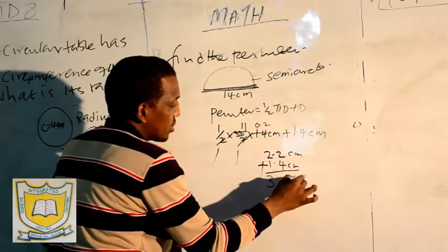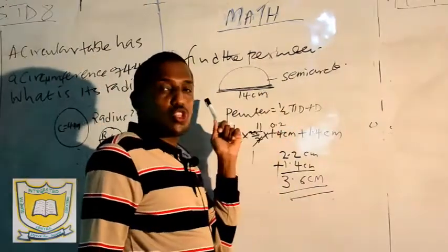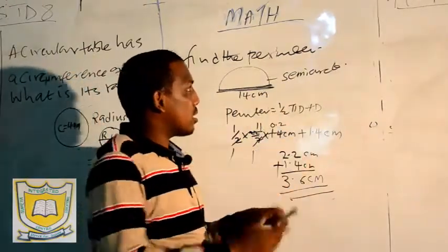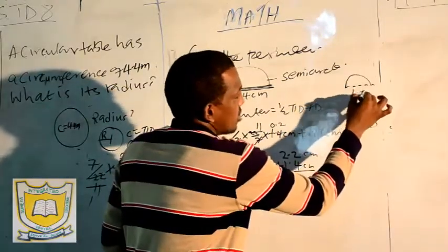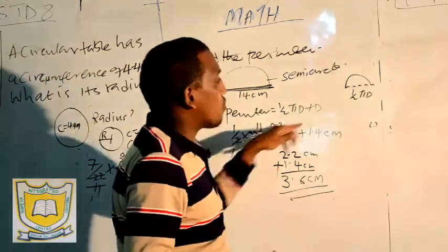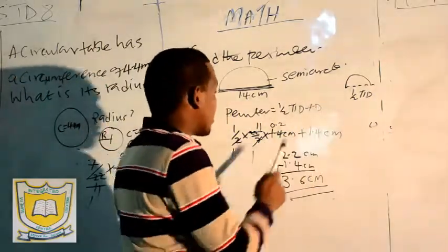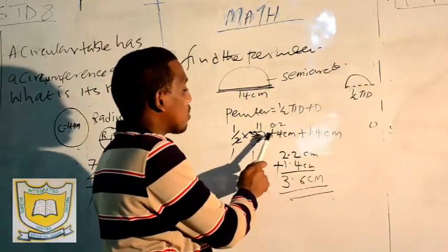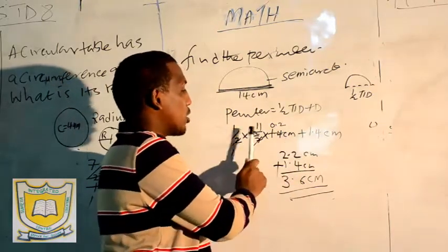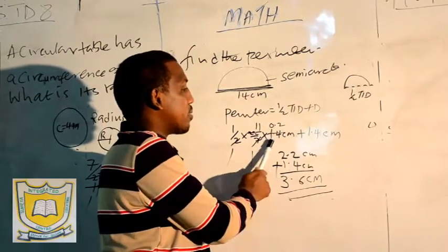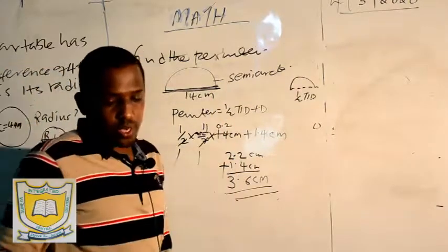You get 3.6 centimeters. That's how we get the perimeter of that figure. If we are finding the perimeter of a semicircle and the line is not dotted, it's half πD plus D. But when the line is dotted, the formula is half πD only, and the answer would have been 2.2. So: half times 22 over 7 times 1.4 plus 1.4 gives 2.2 plus 1.4 equals 3.6 centimeters.